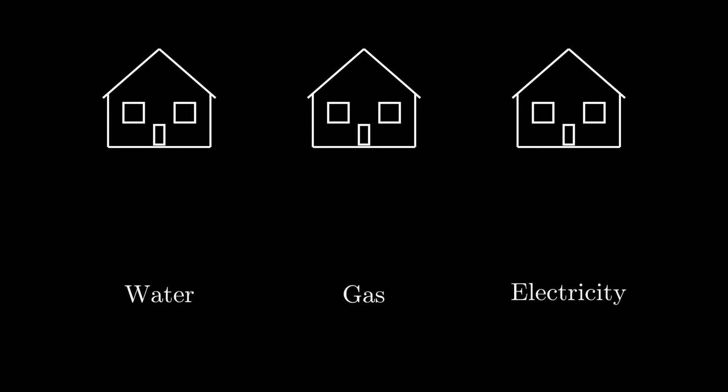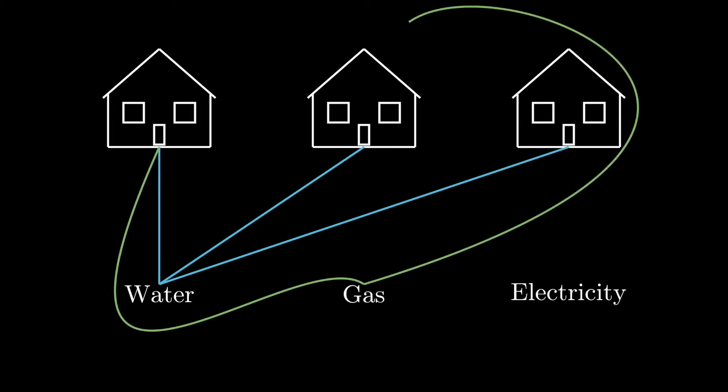So if we start filling this out, you'll see we'll first give each house water, and then we can give each house gas. The lines get a little bit crazier, but it's doable.